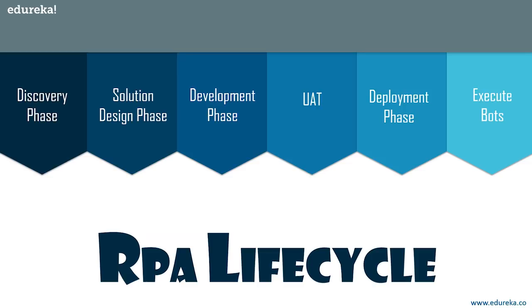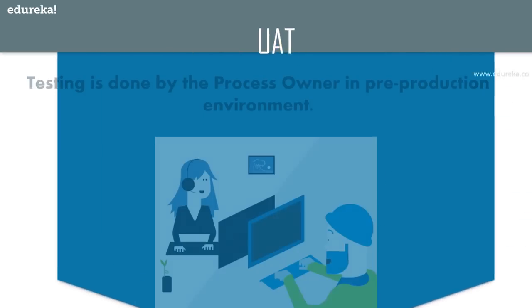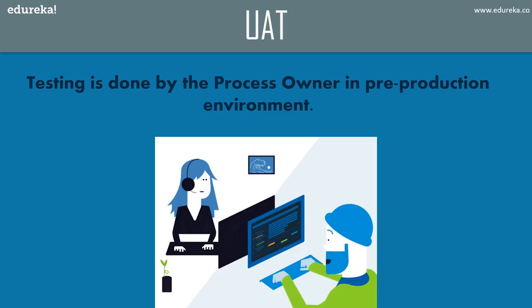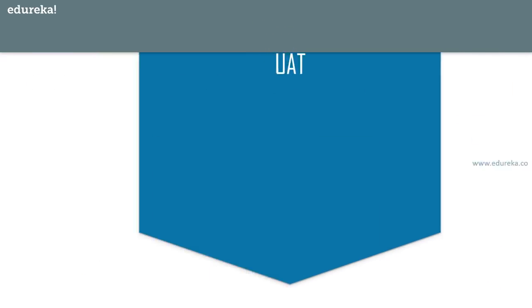Once the bot is developed, the next phase is the UAT phase — the testing phase. Testing is done by the process owner in the pre-production environment to check whether the developed bot is working or not. The bot is deployed to check how users would use it and if there are errors that need to be rectified. Similar to any SDLC lifecycle, the bot is tested in the pre-production environment.